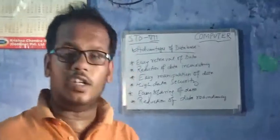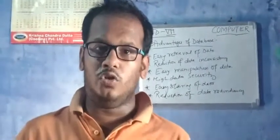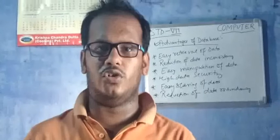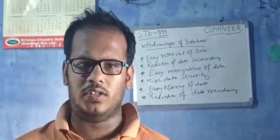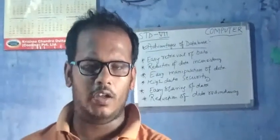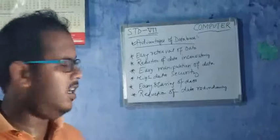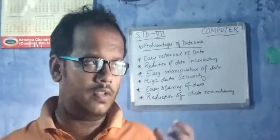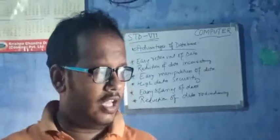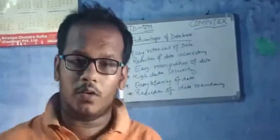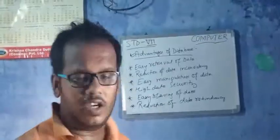Sixth, reduction of data redundancy — this means removing false or duplicate data. Suppose there is a student who left the school; although his data is still there, it is now false data because he is no longer part of the school. Using a proper database, false data will be removed and new data will be added. That is what reduction of data redundancy means.